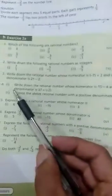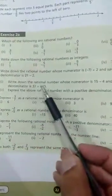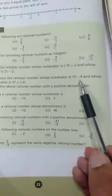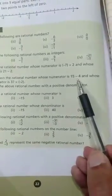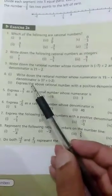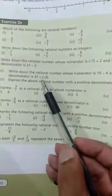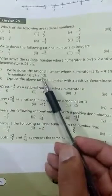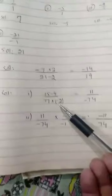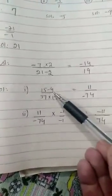Now question number 4. Write down the rational number whose numerator is 15 minus 4. You will write 15 minus 4 in numerator and whose denominator is 37 multiply minus 2. And you will write 37 multiply minus 2 as a denominator like this in solution.